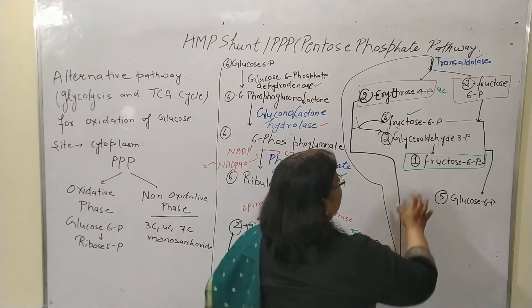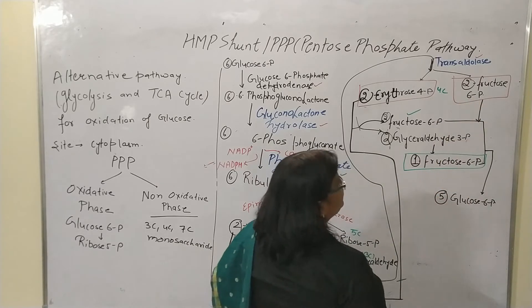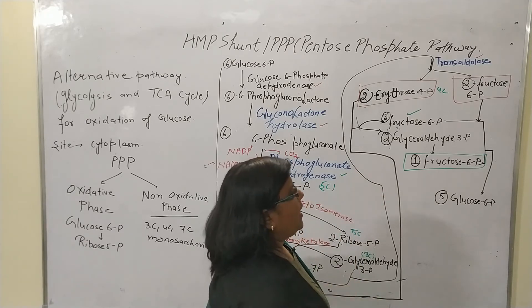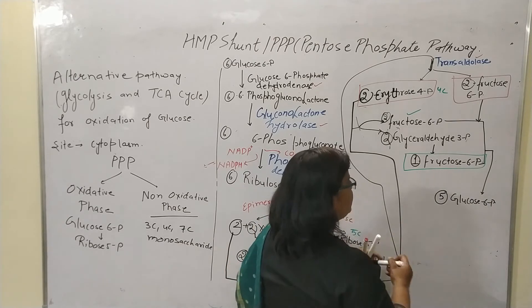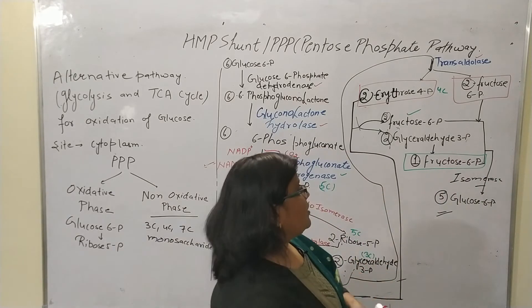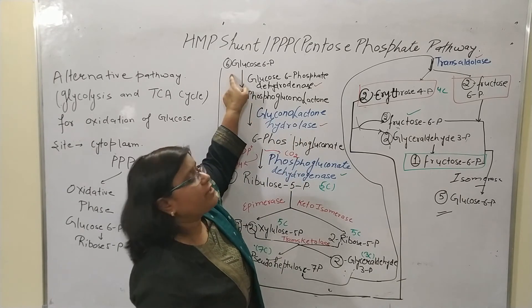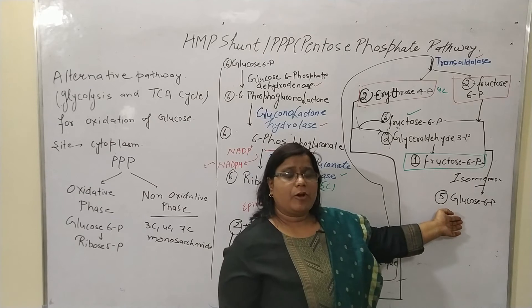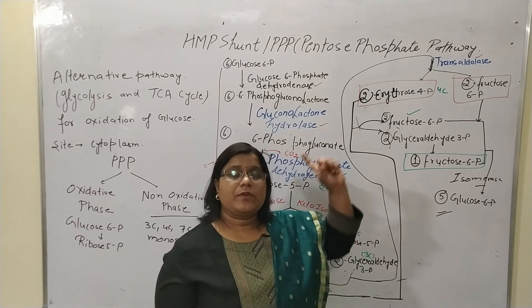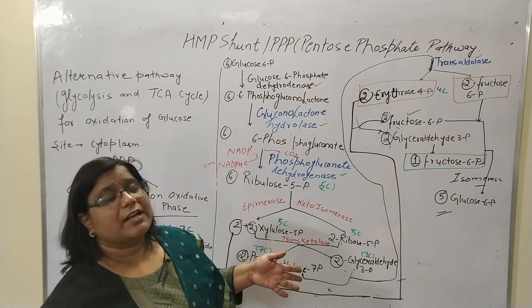So in total, 5 molecules of fructose 6-phosphate are produced. With the help of isomerase, these are converted into 5 molecules of glucose 6-phosphate. Thus, we started with 6 molecules and recovered 5 molecules of glucose 6-phosphate — meaning 1 molecule of glucose is oxidized in this pathway. This confirms it as an alternative pathway to glycolysis and the TCA cycle.